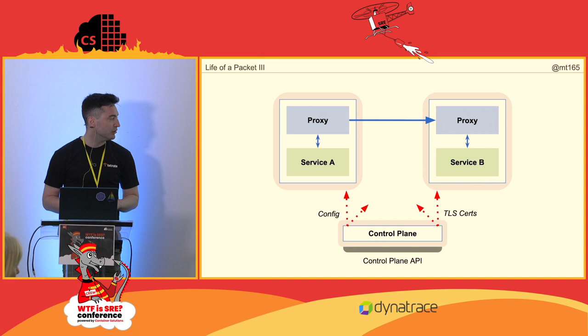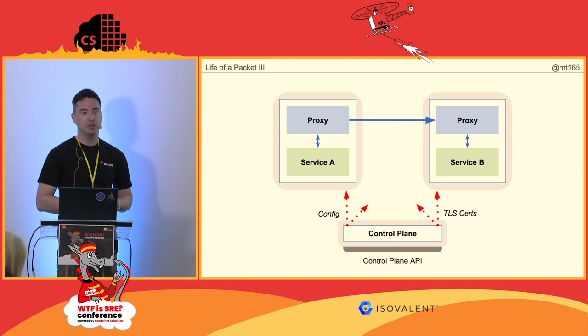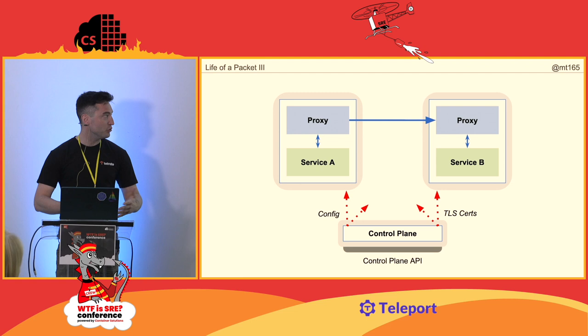The control plane sends configs and various other things to the proxies. We found that control plane itself probably needed an API so we could talk to it — ergonomic to the developers who want to take back control of their apps, and to the security folks looking to enforce and add security on the network.